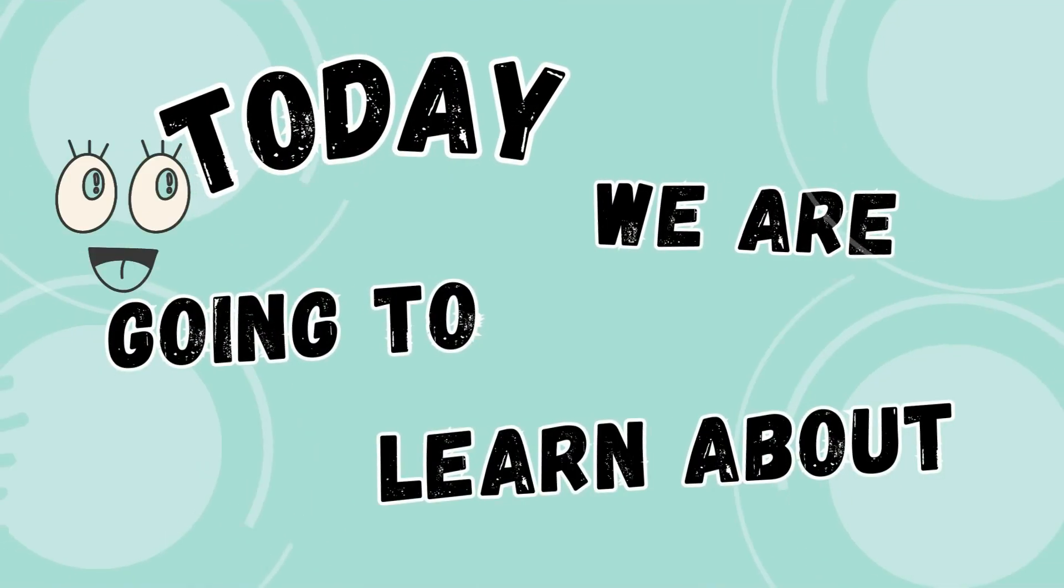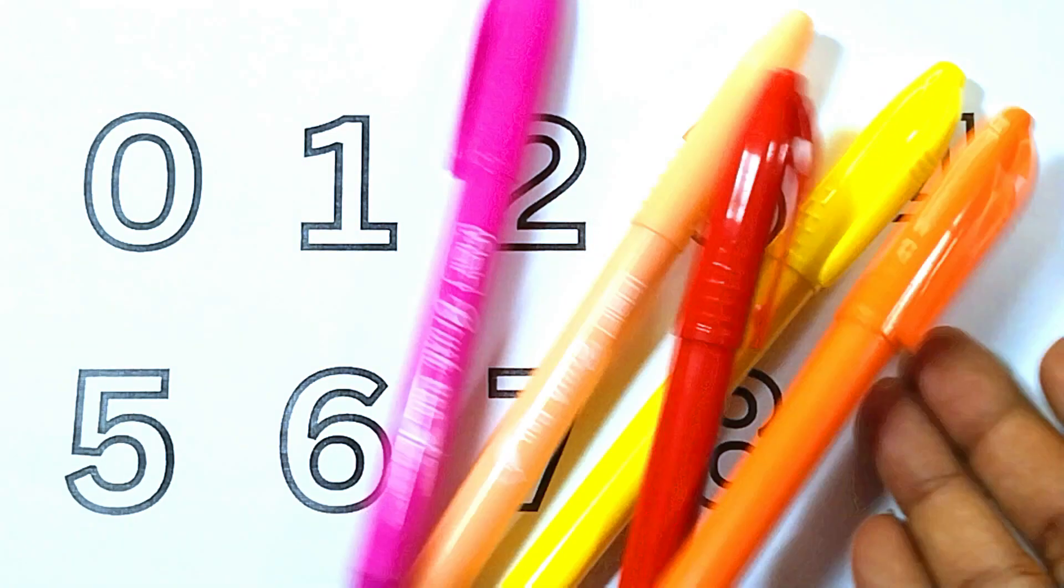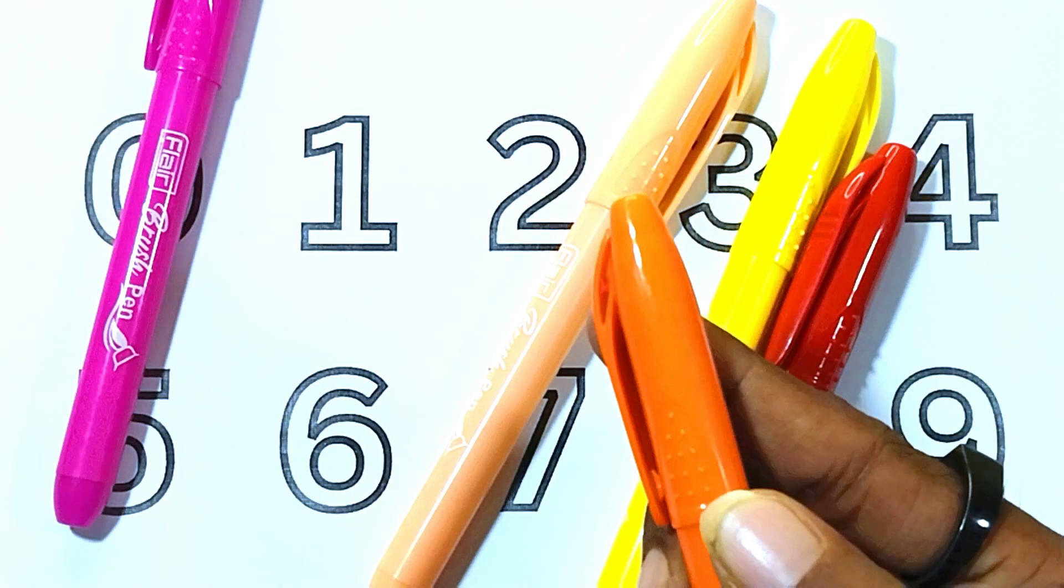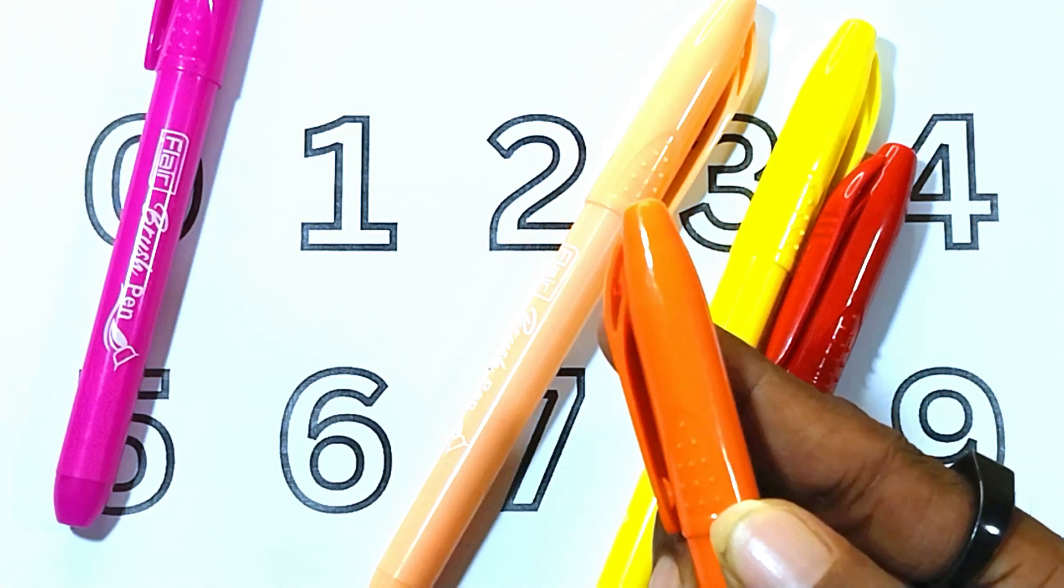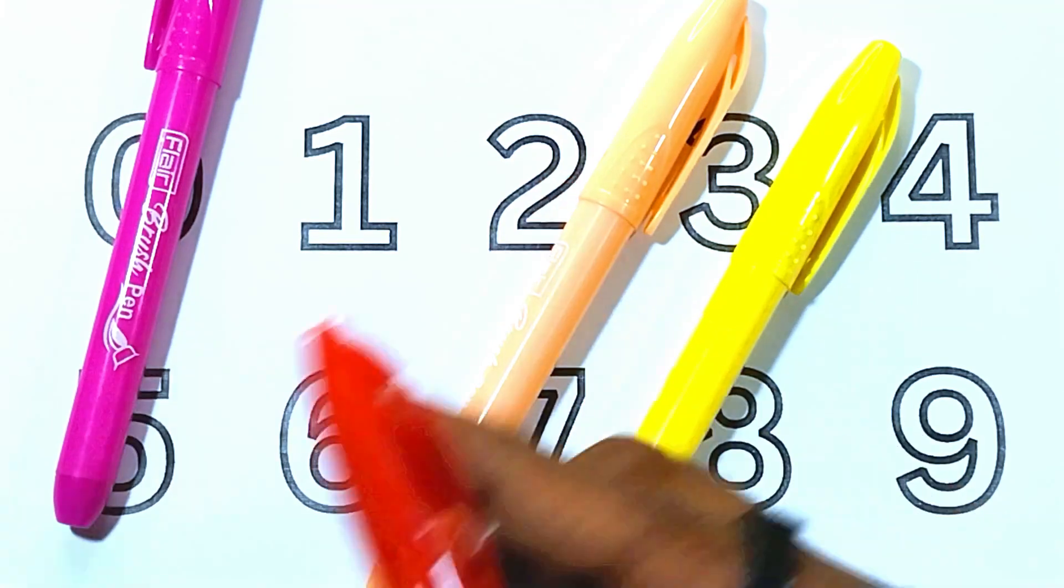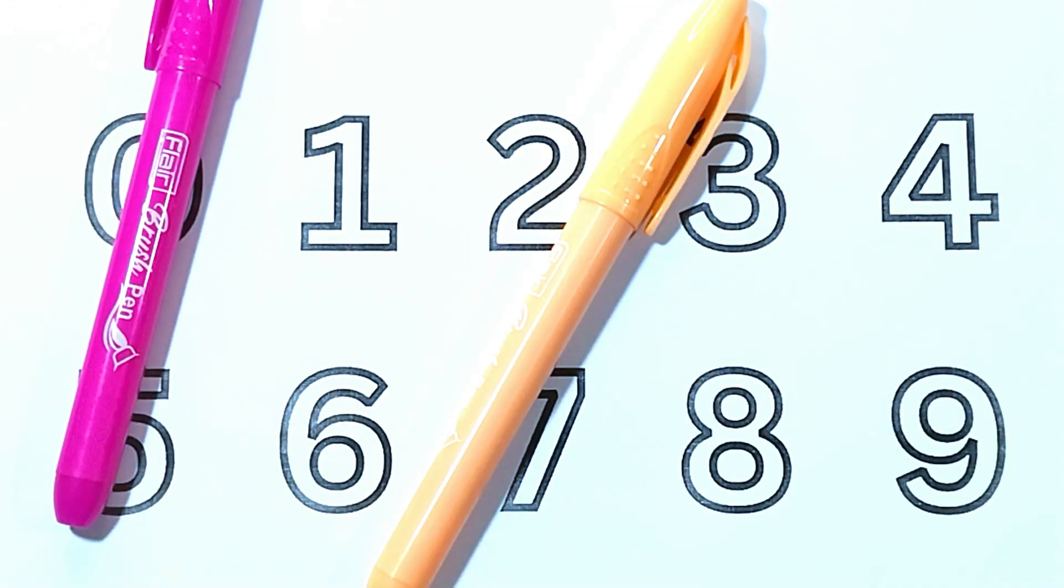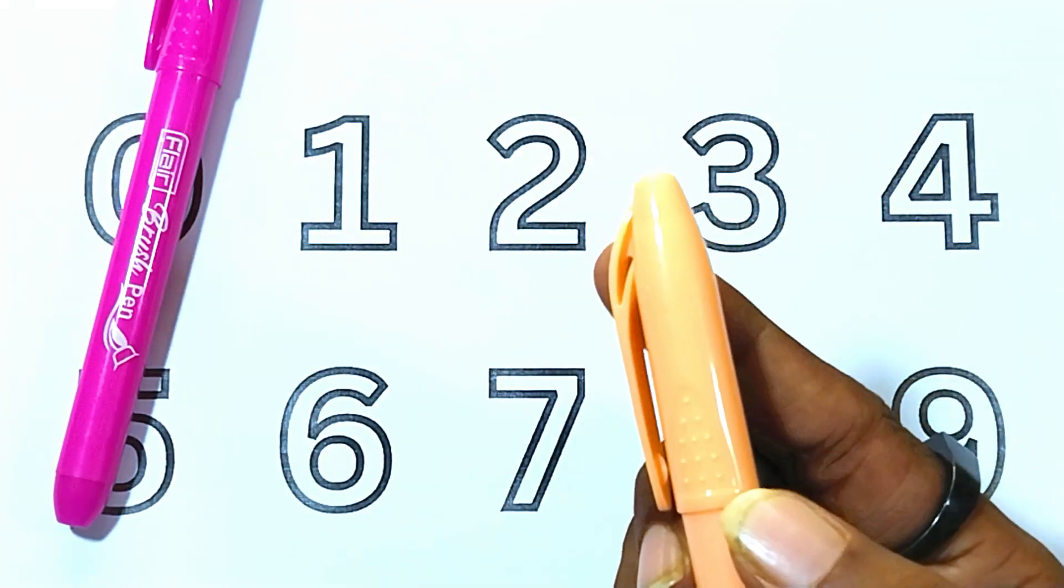Today we are going to learn about numbers and colors. The colors are orange color, red color, yellow color, peach color,